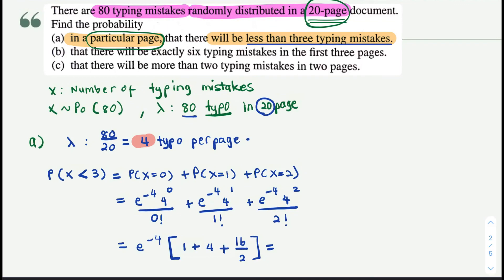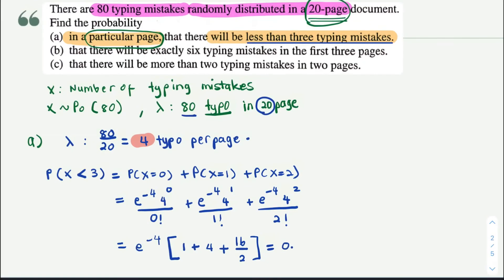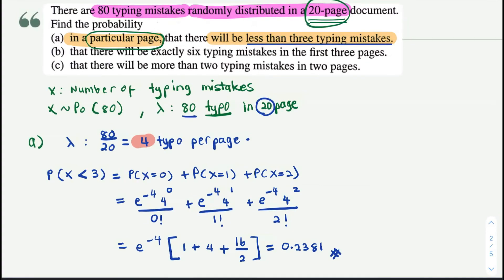Then you can calculate, you're gonna get 0.2381. What is the probability when you have less than 3 typing mistakes in a particular page? Thank you very much.